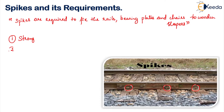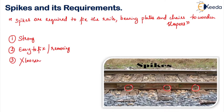The second requirement is that it should be easy to fix, and not only easy to fix — it has to be easy to remove also. In cases when you want to remove or replace the sleepers, rails, or anything, it should be easy to fix and easy to remove. The third requirement is it should not get loosened under vibrations. If it gets loosened, there will be a disturbance in the gauge — the rail, chair, and bearing plate will all get disturbed. So it should not loosen under vibrational loads so that your gauge is maintained properly.